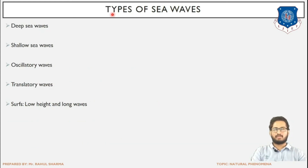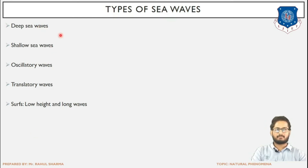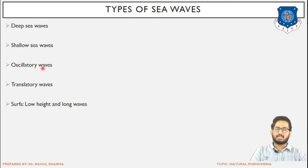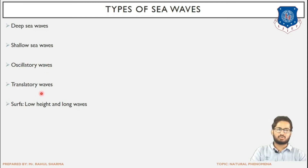Next are the types of sea waves. First are deep sea waves, in which the height — the elevation difference between crest and trough — is more than half of the wavelength, that is the horizontal distance between two successive crests. Next are shallow sea waves, where the height is less than half of the wavelength. Then there are oscillatory waves and translatory waves. Oscillatory waves have very minimum movement, while translatory waves consist of motion that propagates over a longer distance.